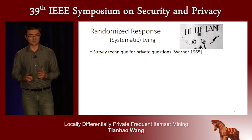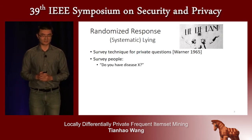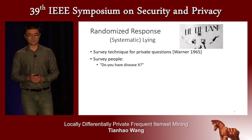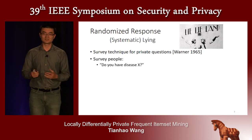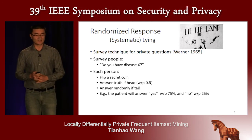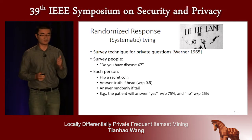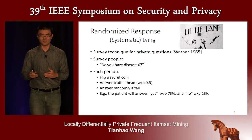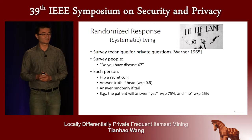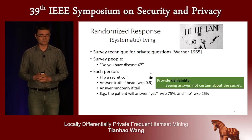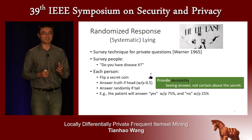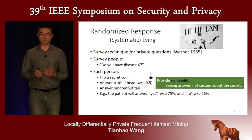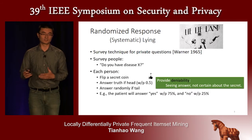This is a survey technique proposed in the 1960s. For example, the survey asks every user: do you have a certain disease? Each user will flip a secret coin — an unbiased coin. If it comes up heads, they will answer the truth with 50% probability; otherwise, they answer randomly. The good thing about this protocol is that it provides what we call deniability, meaning that seeing the answer, no one is able to tell the truth.